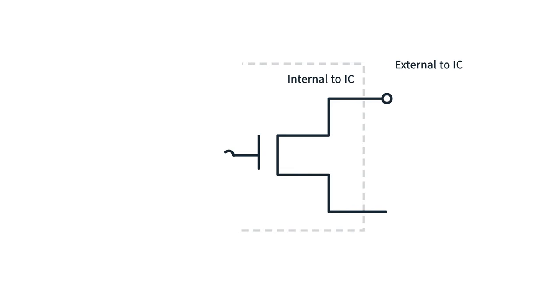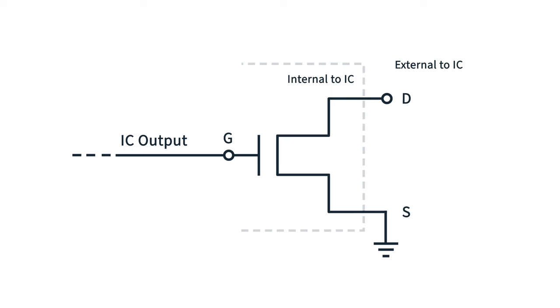An open drain output is configured like an open collector, but uses a MOSFET instead of a BJT. Much like there's a base, emitter, and collector of a BJT, in a MOSFET there's the gate, source, and drain. The output of the device is connected to the drain of an internal MOSFET. The internal IC control is connected to the gate of the MOSFET, which opens or closes like a switch. If there is a high voltage applied to the gate, then the switch closes, showing a low impedance between the drain and ground.